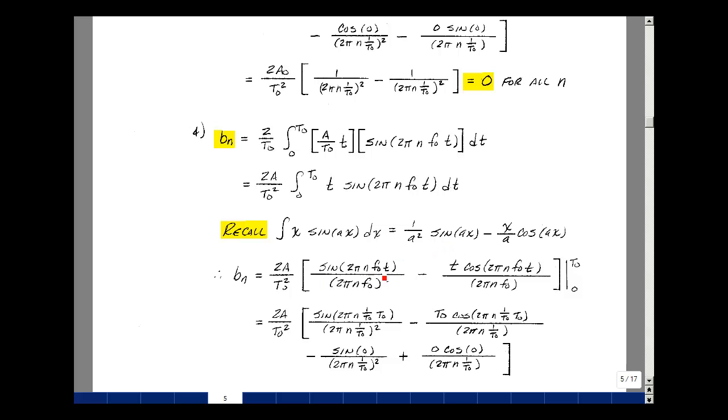And here's the term sine of ax divided by a squared, minus x divided by a times the cosine of ax. That way we get the upper limit minus the lower limit. Plug in for t, t0, t0, and t0. And again, write f0 as 1 over t0, and we're going to get some term cancellations.